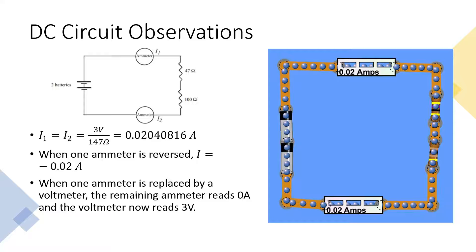When one ammeter is reversed, it reads the opposite sign value of negative 0.02 amps. When one ammeter is replaced by a voltmeter, the remaining ammeter reads 0 amps, and the voltmeter now reads 3 volts. The voltmeter is not a conductor and does not allow for charge to flow through it. It acts as a sink for current and does not allow electrons to flow through. The ammeter then reads 0 amps because no current is flowing, and the voltmeter can record the EMF of the circuit.